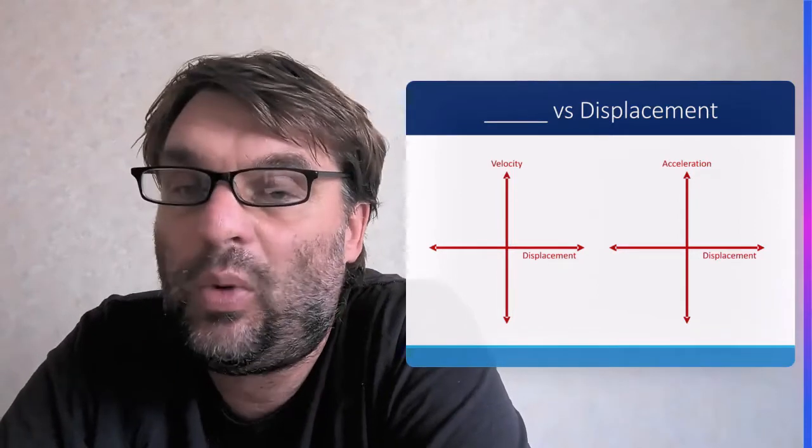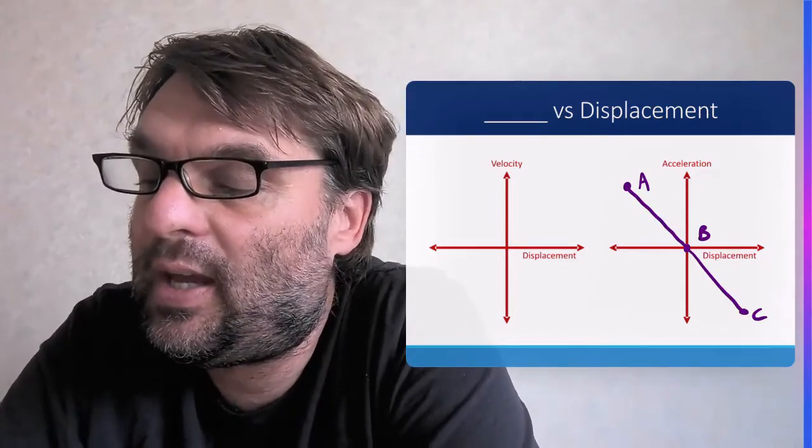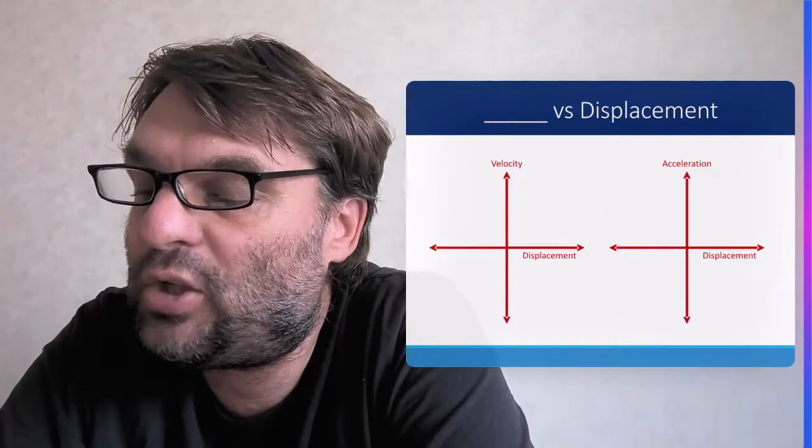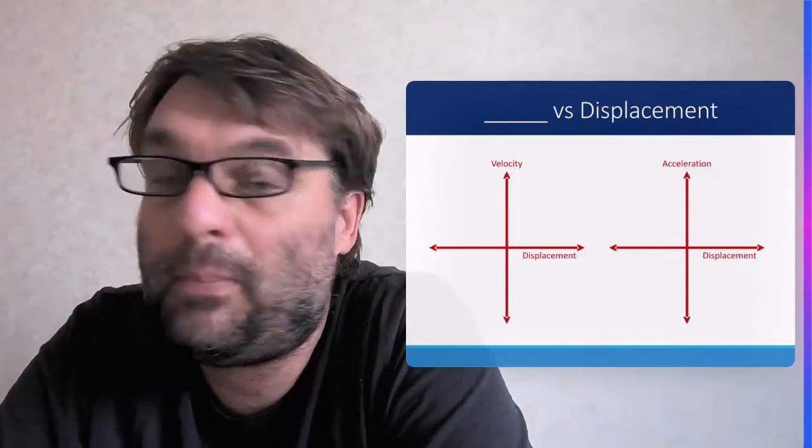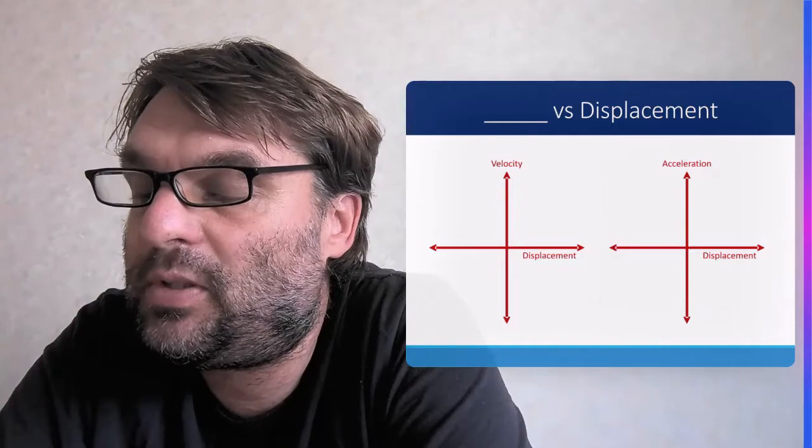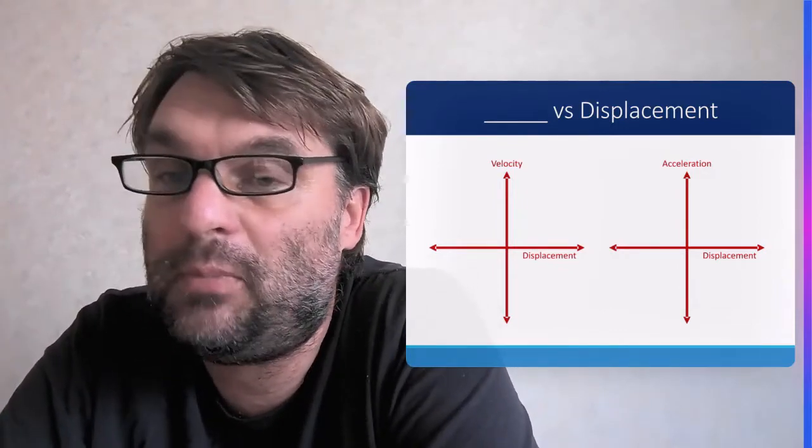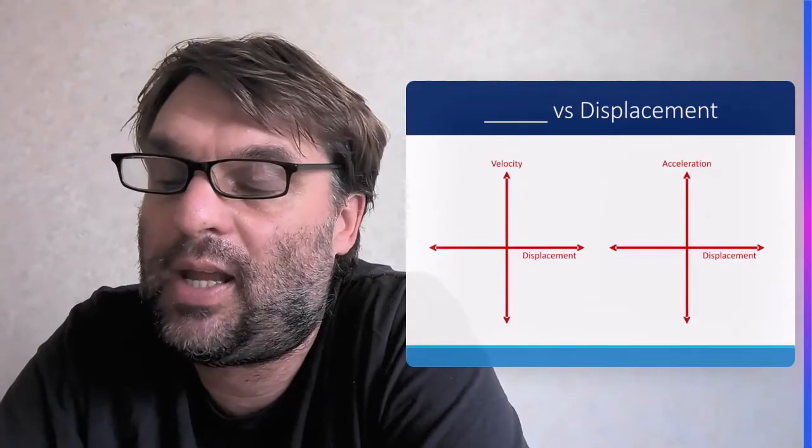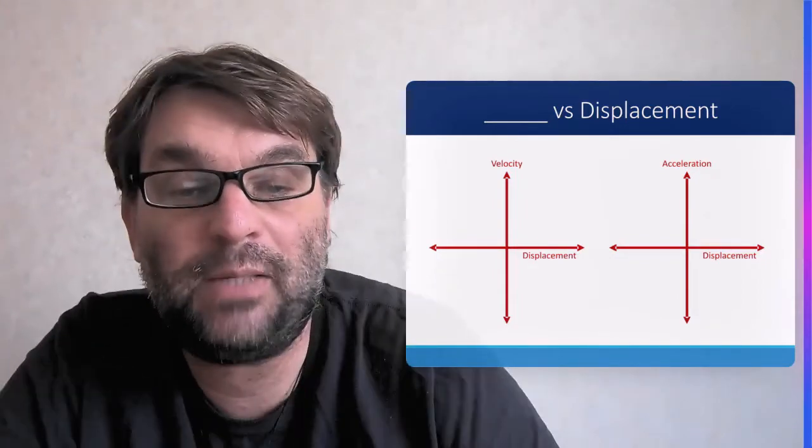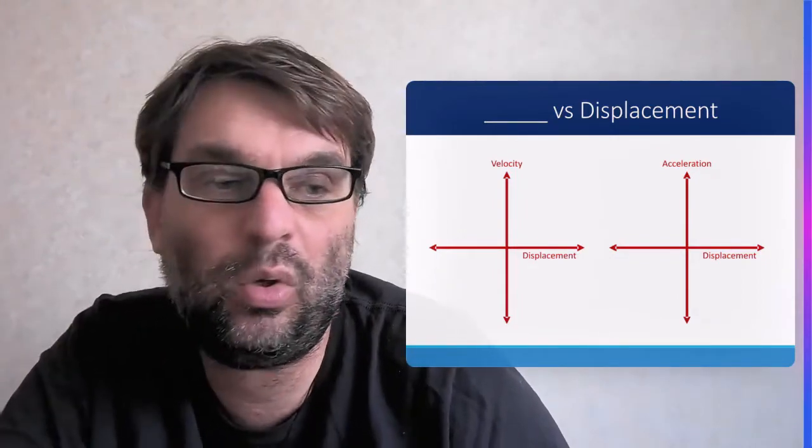In terms of acceleration, we have point A, which has the maximum positive acceleration but negative displacement. Point B is right in the middle, so zero displacement, zero acceleration. And point C is going to be maximum negative acceleration and maximum positive displacement. So that's what those graphs will look like.